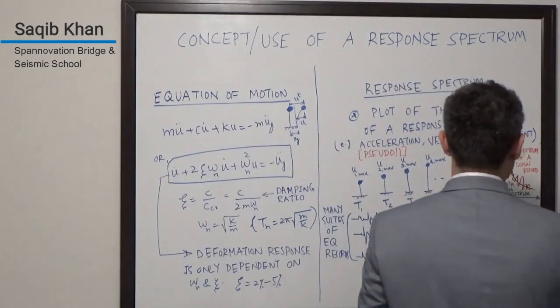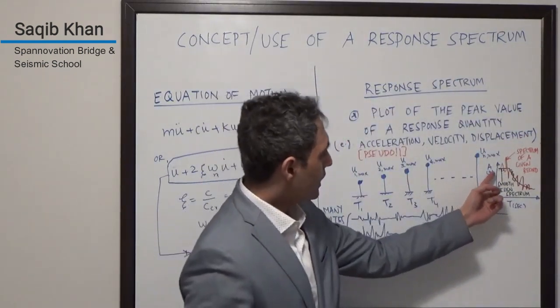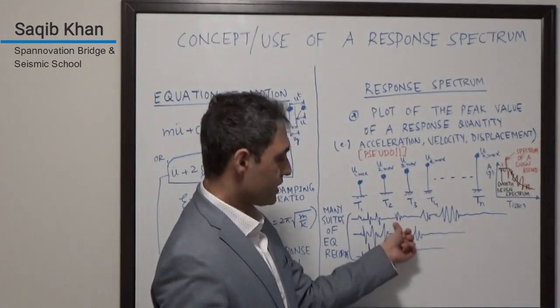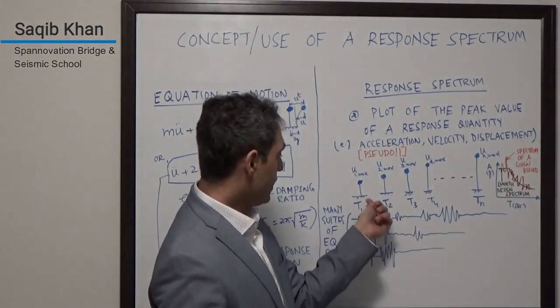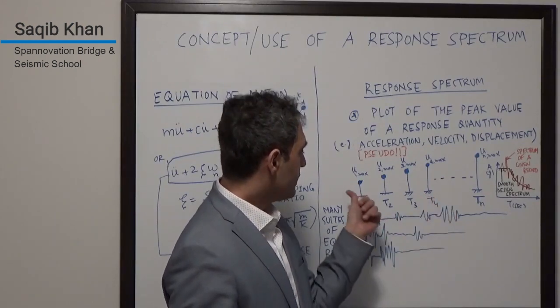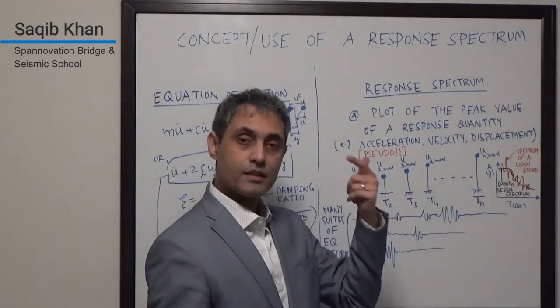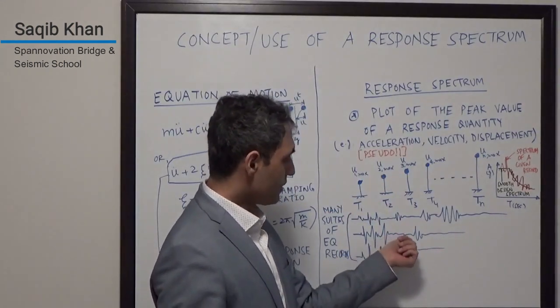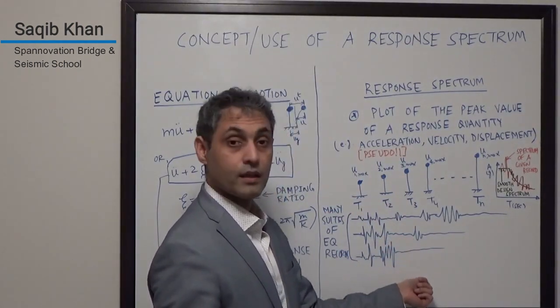So over here, I am just showing in red the spectrum of a given record. So this record, for example, when it is run through this system versus that system and that system and that system, through each system, it will give me a different displacement or acceleration value. Same thing is going to repeat for this and the next one and the next one.